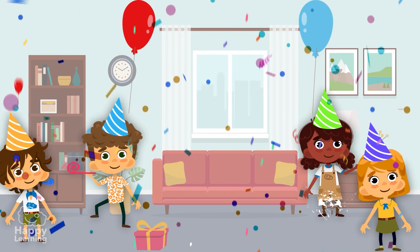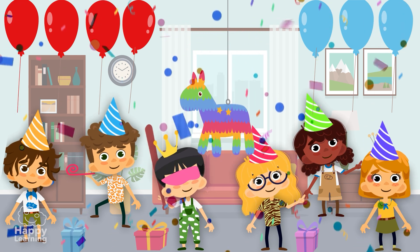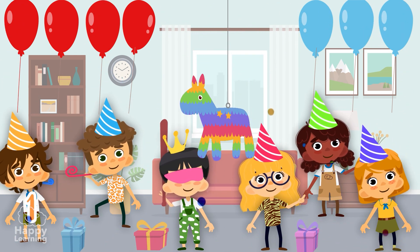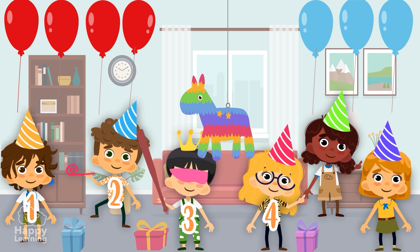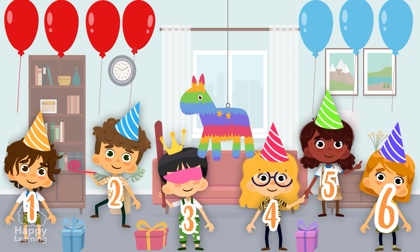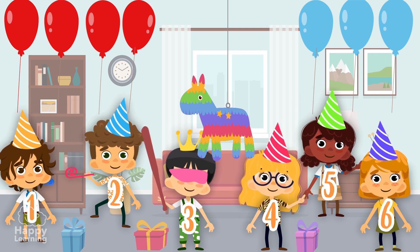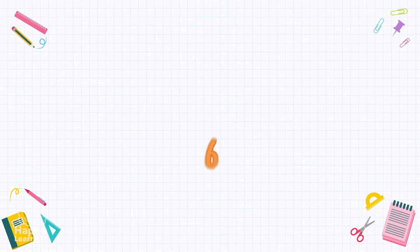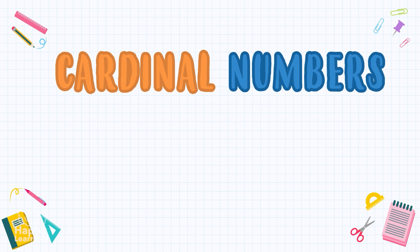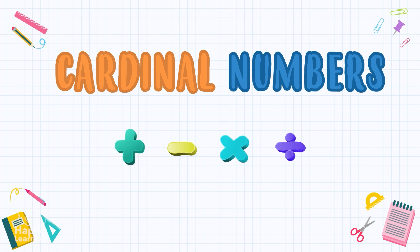The happy panny is having a birthday party! How many children are there at his party? Let's count them: one, two, three, four, five, and six. They are six children! So we can say the number of children at the party is six — that six is a cardinal number. With cardinal numbers, we can also do mathematical operations: we can add, subtract, multiply, and divide.